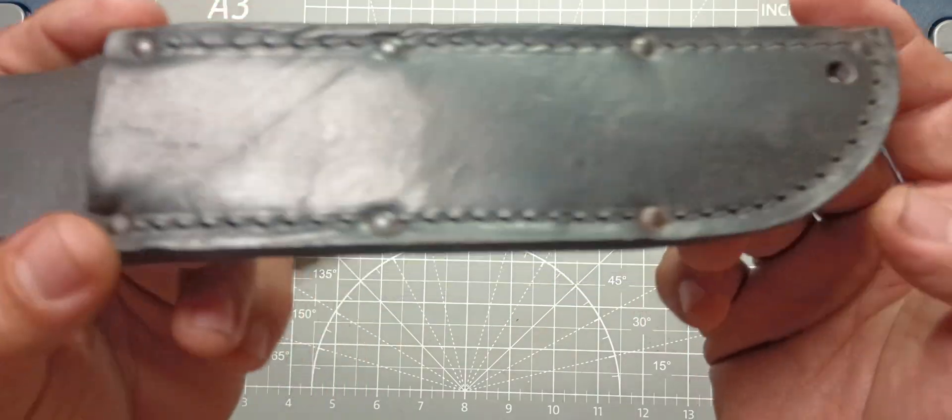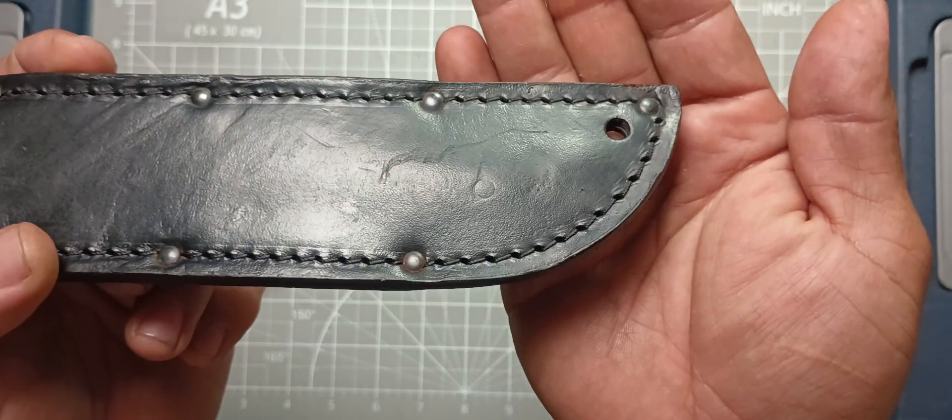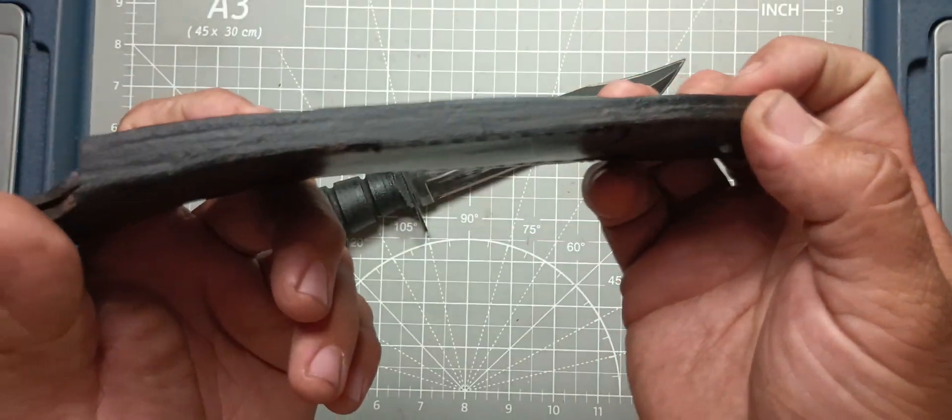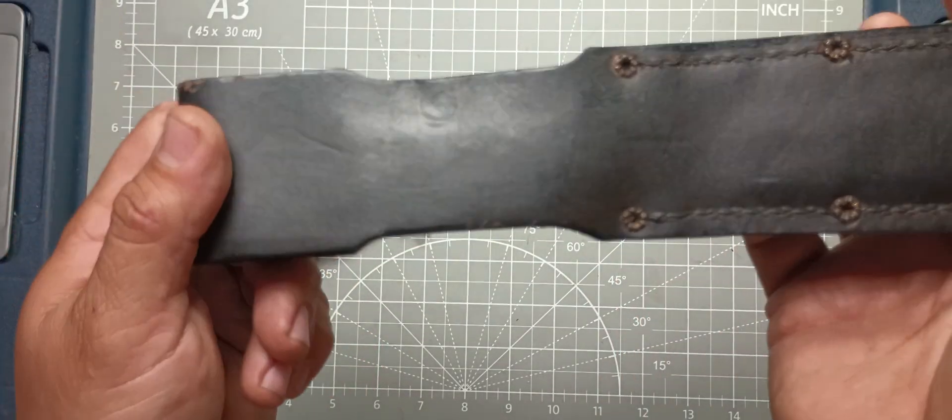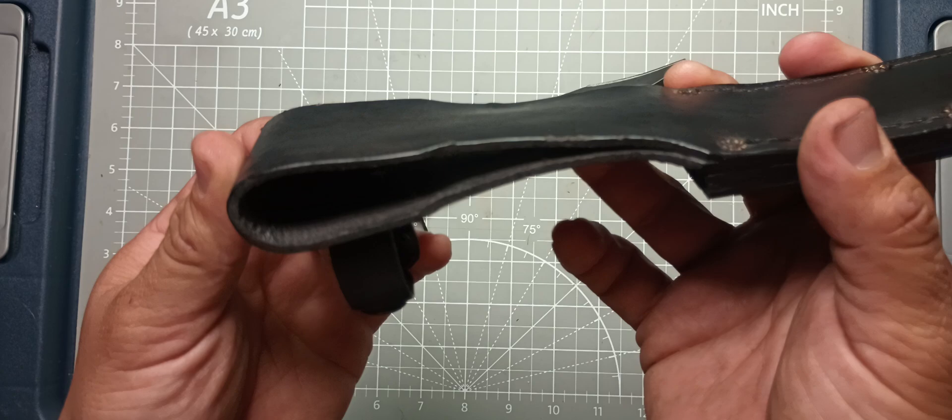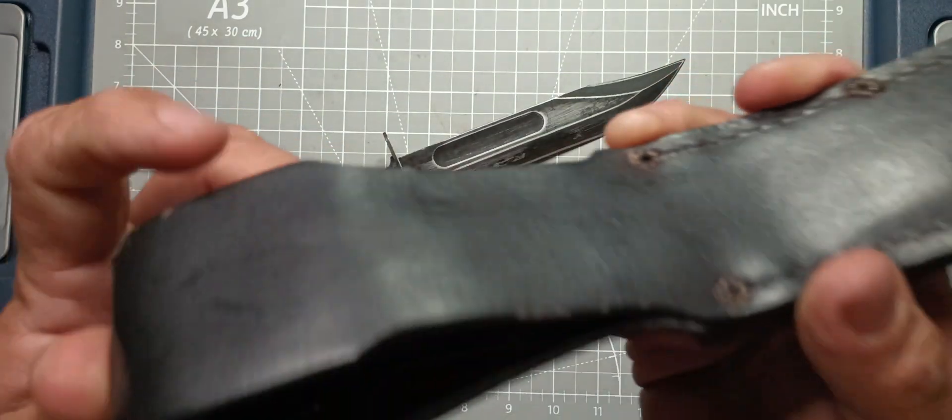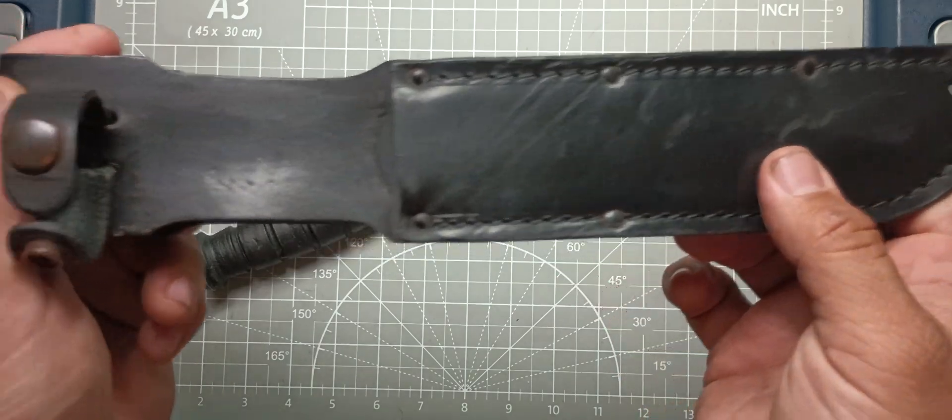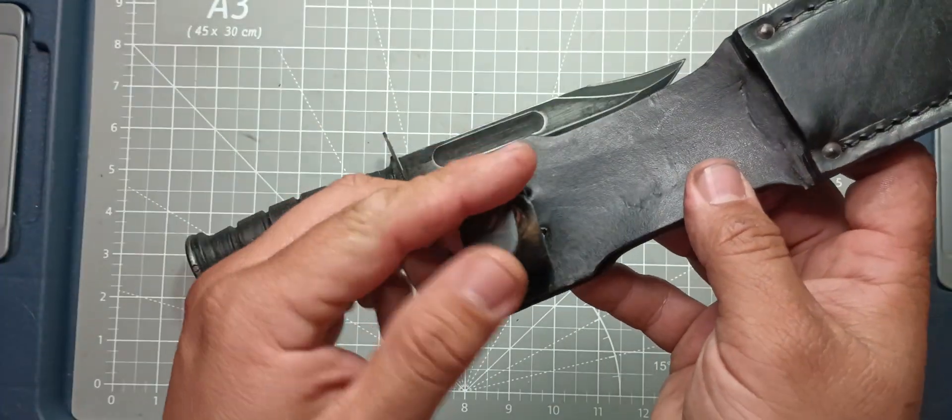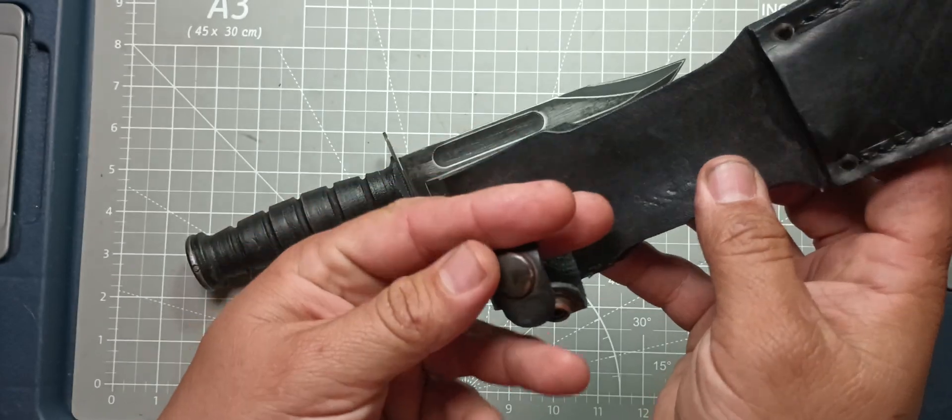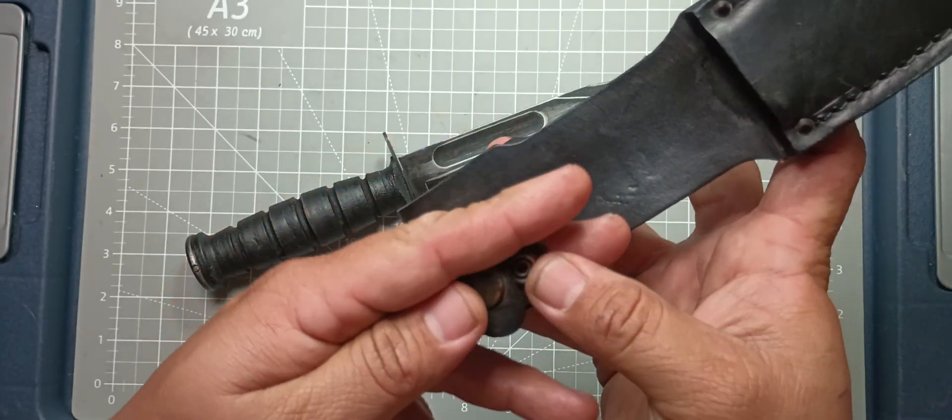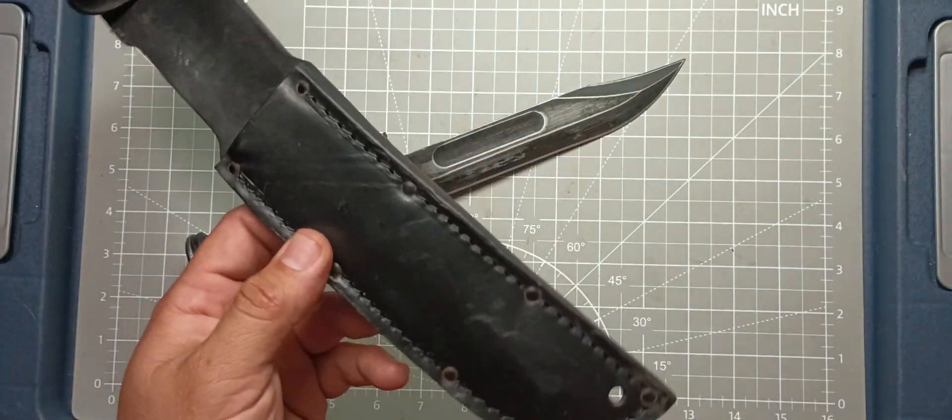This is the leather sheath that it comes with. It has a drainage right here. Pretty cool black leather sheath. Big old belt loop here. It has one button snap. It has a sheath for it.